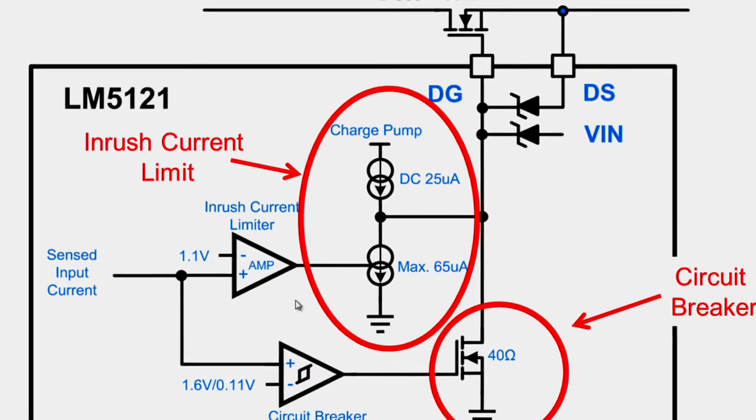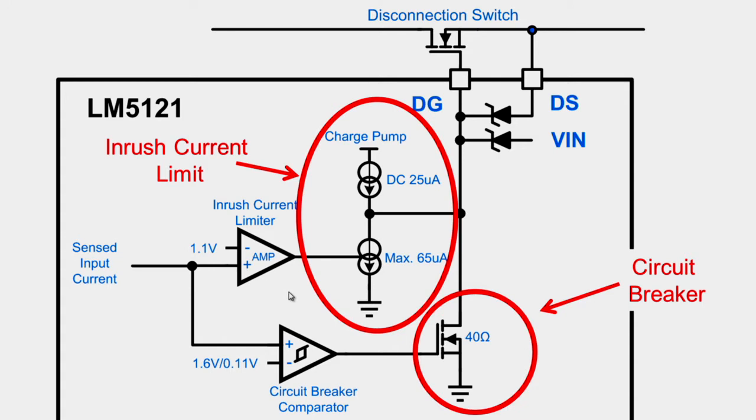For maximum safety, LM5121 quickly turns off the disconnection switch using the circuit breaker switch when the sensed input current is greater than circuit breaker threshold.